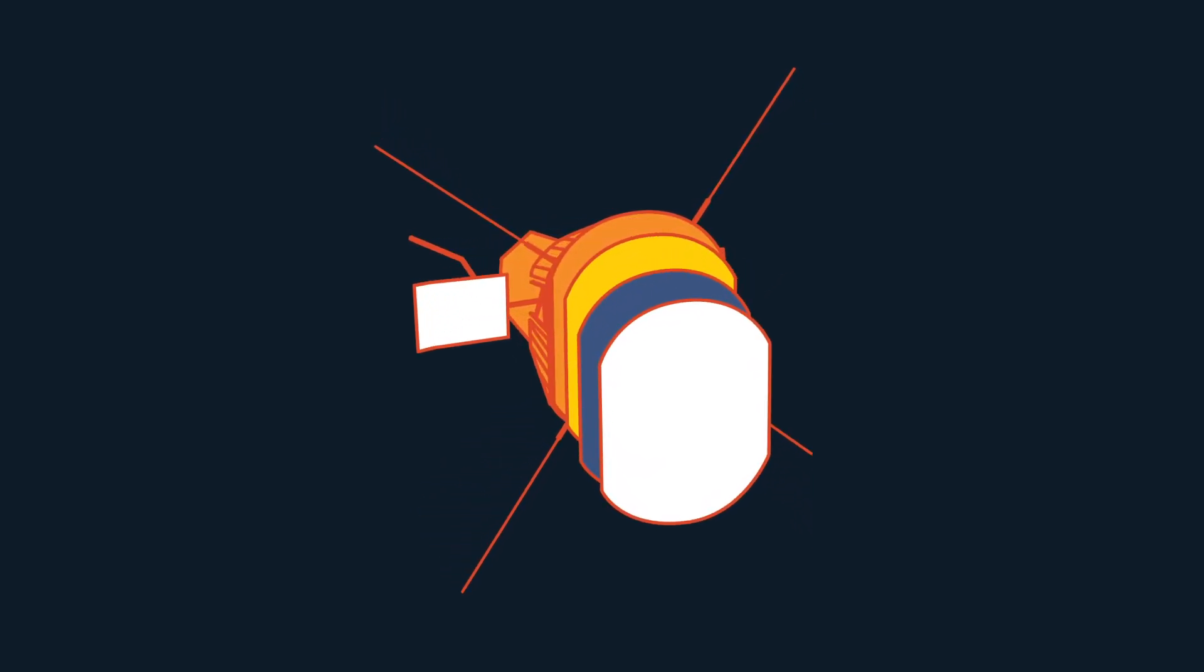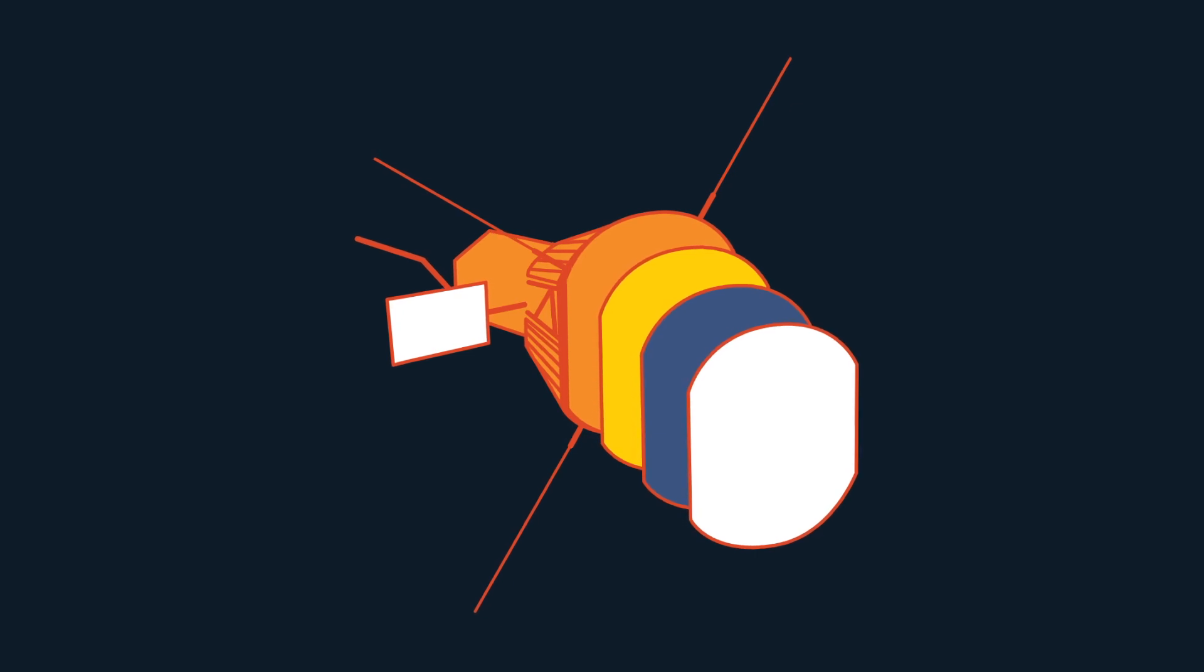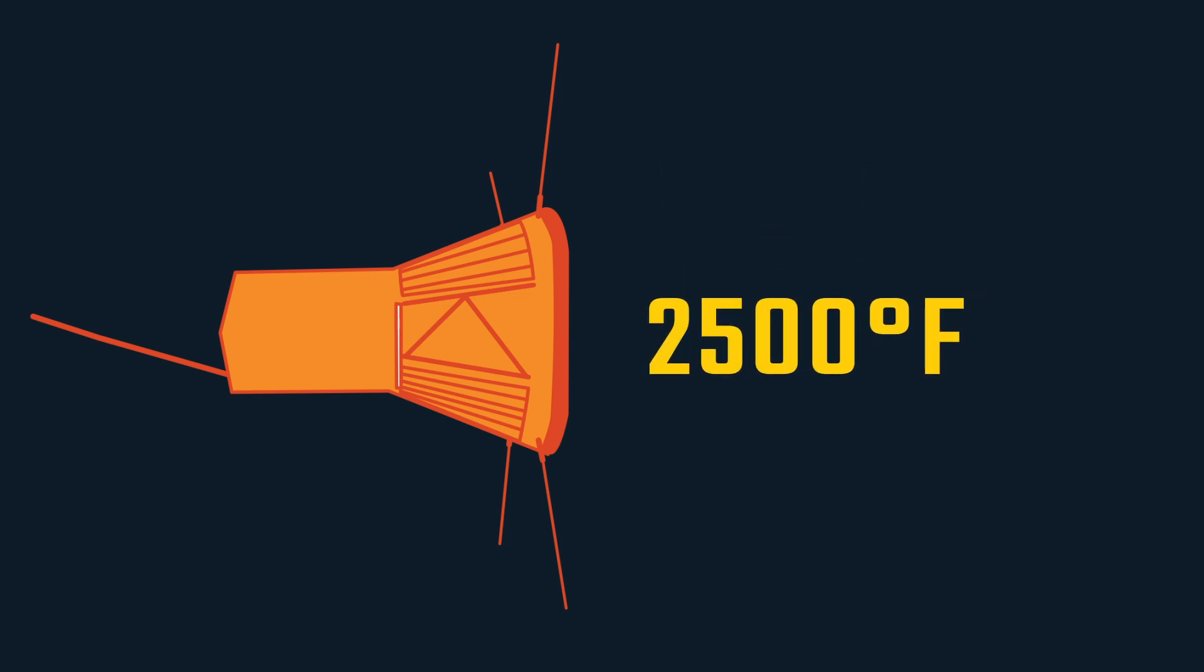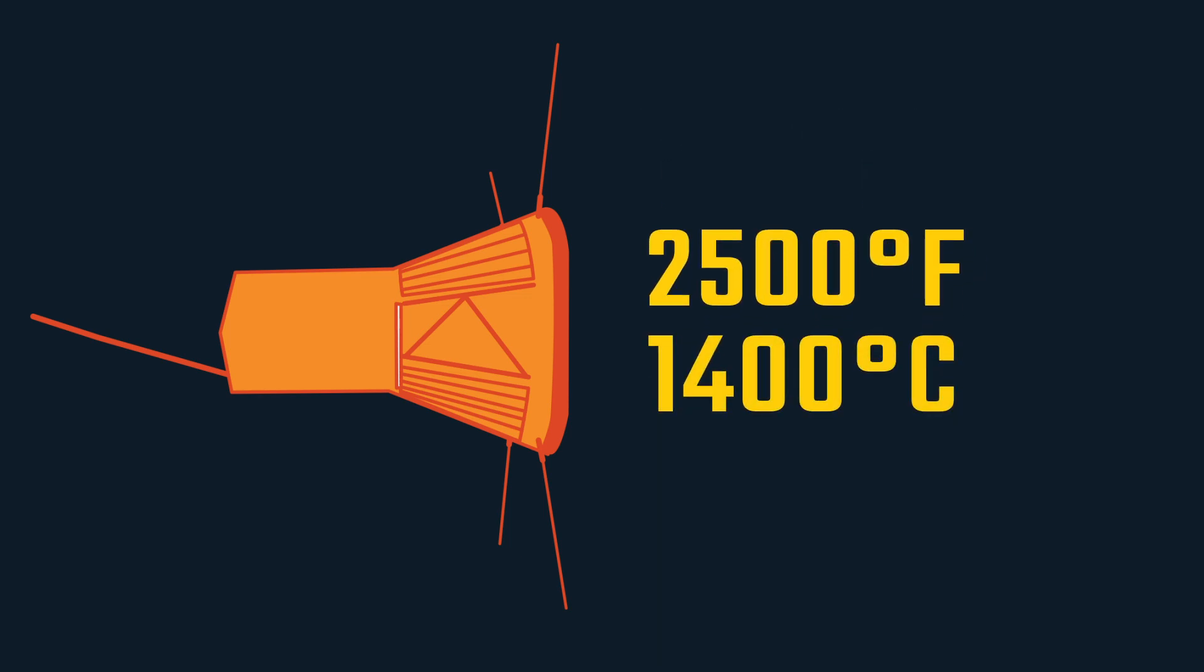The answer is creative engineering. The spacecraft is protected from the sun's heat by a state-of-the-art shield. Just 4 1⁄2 inches thick and made of carbon, carbon foam, and composite, the shield can withstand temperatures that approach 2,500 degrees Fahrenheit or 1,400 degrees Celsius.